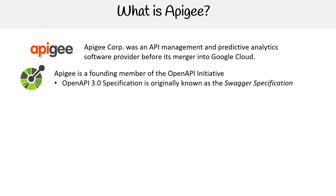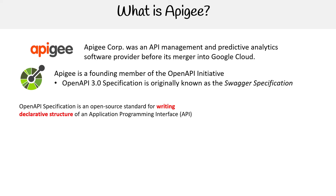The Open API 3.0 specification, originally known as the Swagger specification, is an open source standard for writing the declarative structure of an application program interface (API), and can be written in either JSON or YAML format.